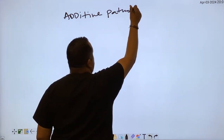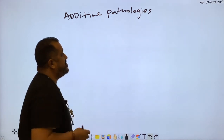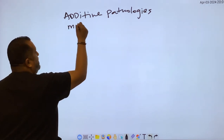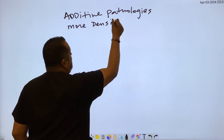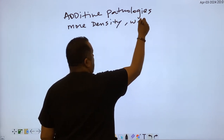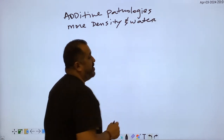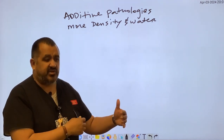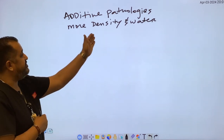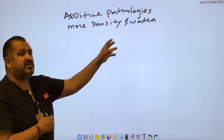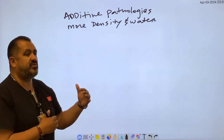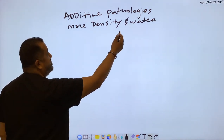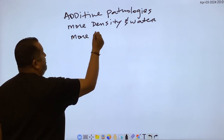So additive pathologies. We know that pathologies are diseases, correct? Additive pathologies is where you either have more density, more tissue density to the object, or you can have water. Pathologies that include water such as edema, or if it's pus, something that's adding fluid to the tissue. So if you increase the density of the object or you have more water in the body, the x-rays that are interacting with the tissue are going to be attenuated more. So when you have more density or more water, you're going to have more attenuation.